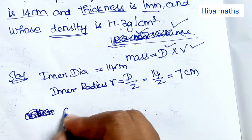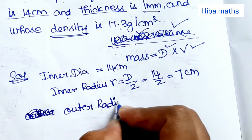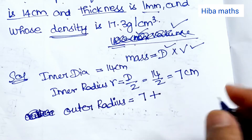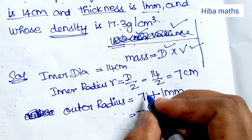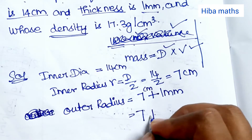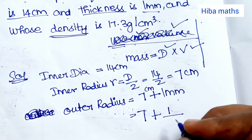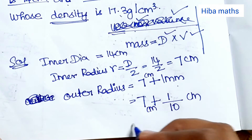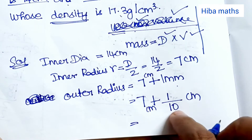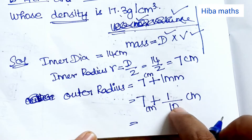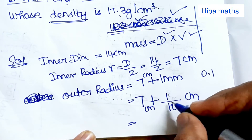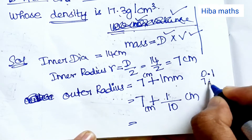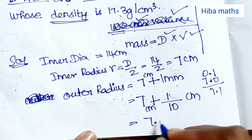Inner radius is 7 cm. For the outer radius, the thickness is 1 mm, which we convert to cm by dividing by 10, giving 0.1 cm. So outer radius R equals 7 plus 0.1, which is 7.1 cm.